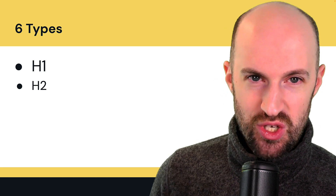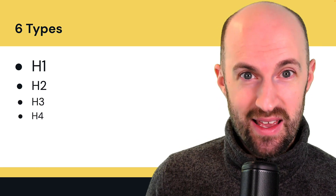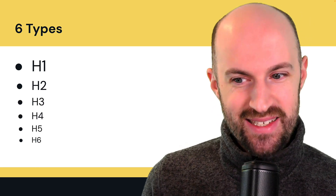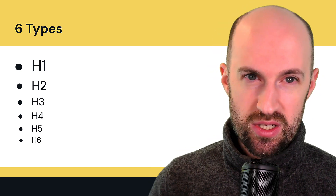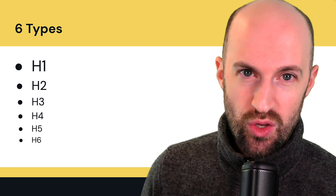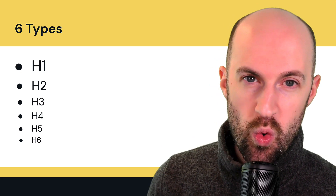And what does that mean? You'll see them right here. You've got the H1 — the highest level of the heading tags — then H2s, H3s, H4s, H5s, and H6s. So there are six different hierarchies, and you'll use them in that order.